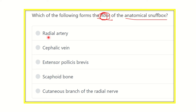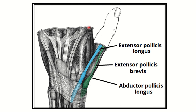The options are: radial artery, cephalic vein, extensor pollicis brevis, scaphoid bone, and cutaneous branch of the radial nerve. We have to find out which of these options forms the base or floor of the anatomical snuffbox.